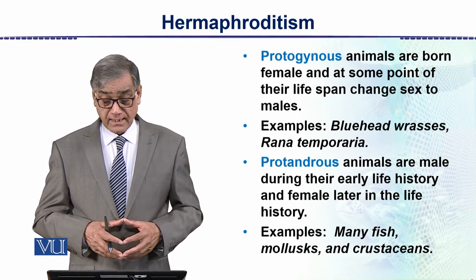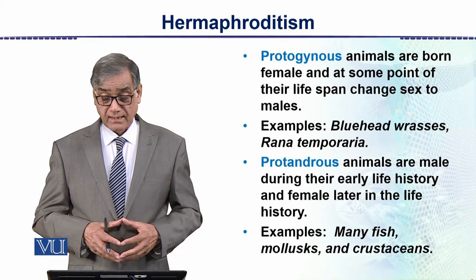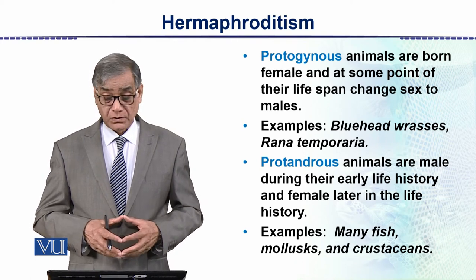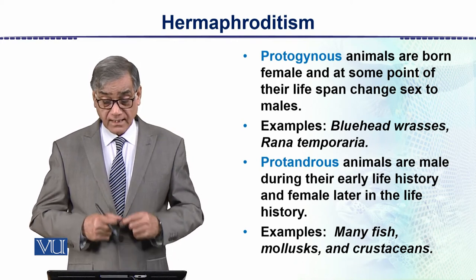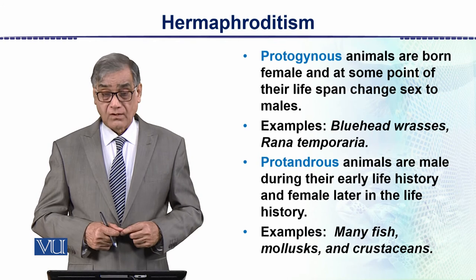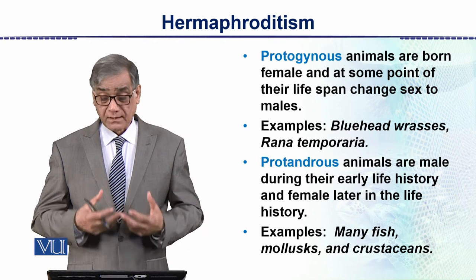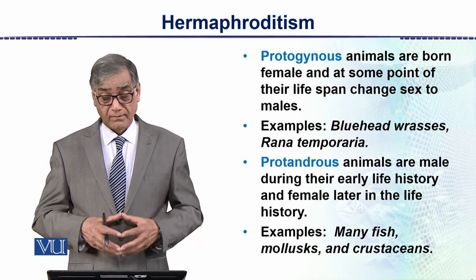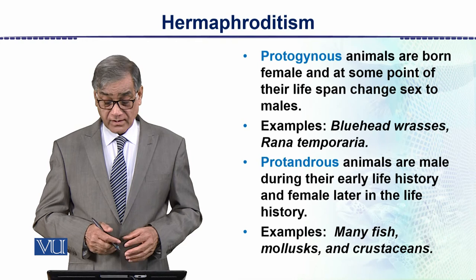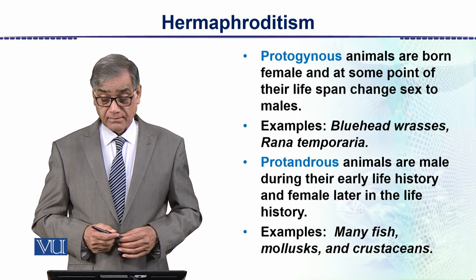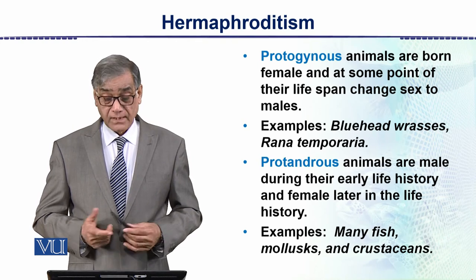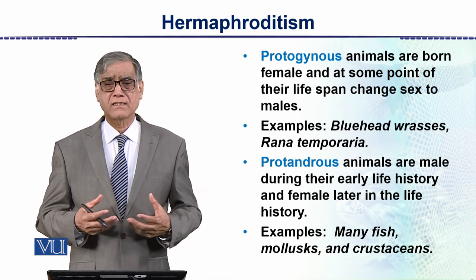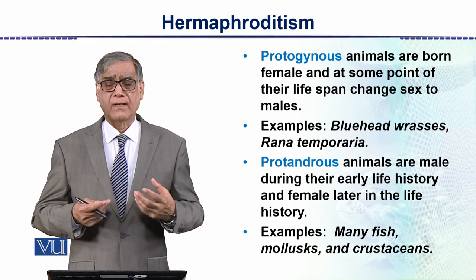Protandrous animals are male during their early life — male by birth — and later they become female. There are many fish that fall into this category.